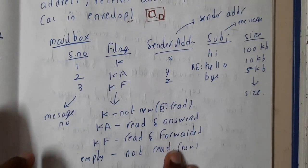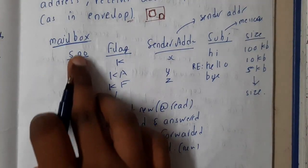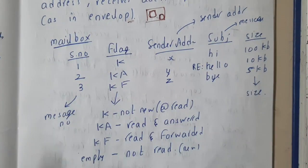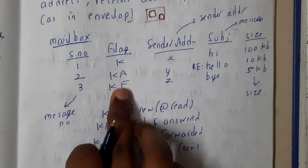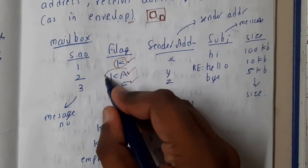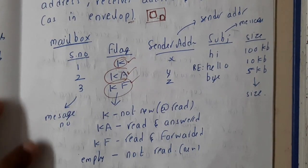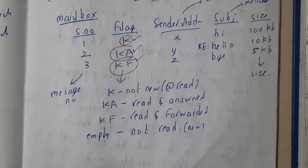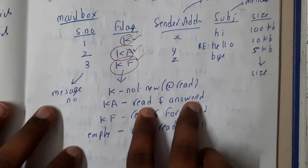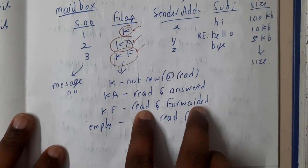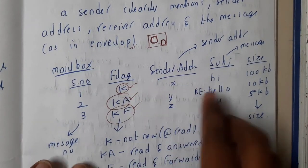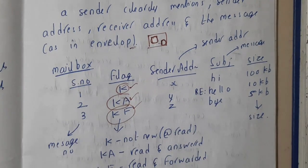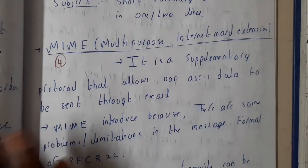Looking at a sample mailbox format similar to older mailboxes: you have serial numbers for each mail, and a flag indicating the status of each mail. 'K' means the mail has already been read. 'KA' means it was read and answered — you replied. 'KF' means you read it and forwarded it. An empty flag means you didn't read or perform any operation on it. You also see the sender details, a message preview, and the size of the mail.